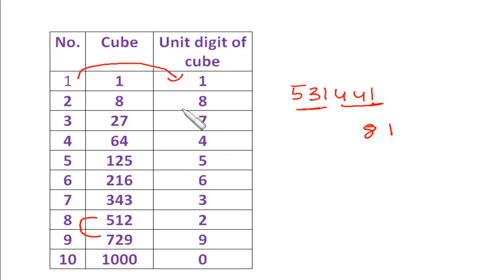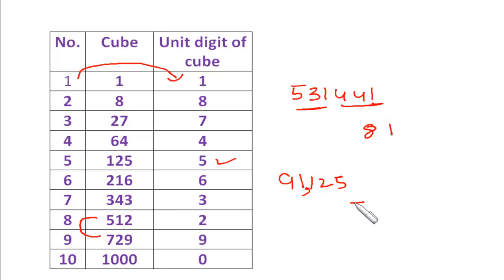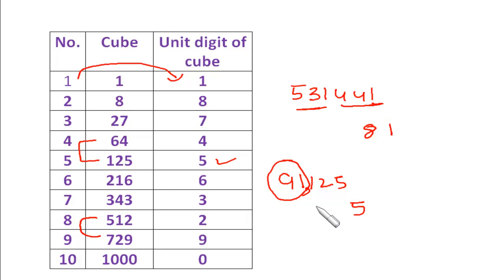Let's take one more number: 911125. The unit digit of the given number is 5, so its cube root will have unit digit 5. The remaining part, 91, lies between the cubes of 4 and 5, so the tens place will be 4. Therefore the cube root of 911125 is 45.